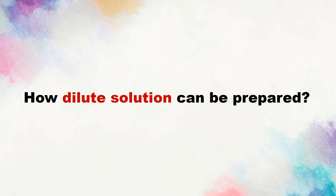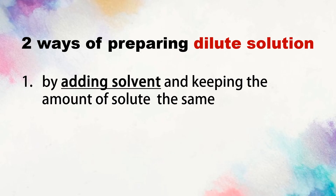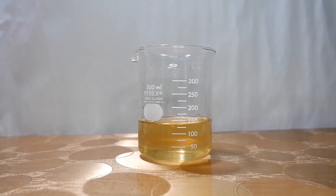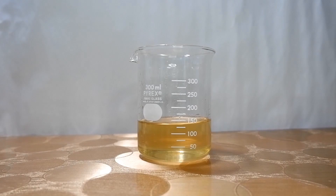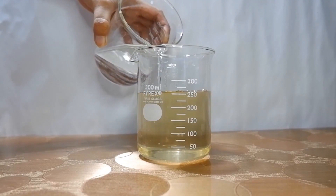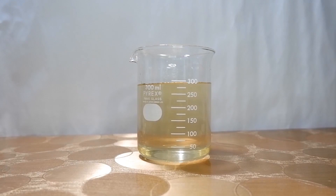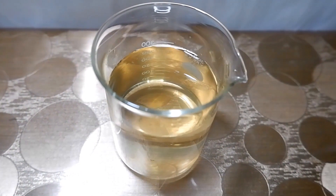How can a dilute solution be prepared? There are two ways. Number 1: by adding solvent and keeping the amount of solute the same. For example, you have a solution of water and sugar. By adding more water and keeping the amount of sugar the same, you are making a dilute solution. It has more water and less sugar, and its color is light yellow.